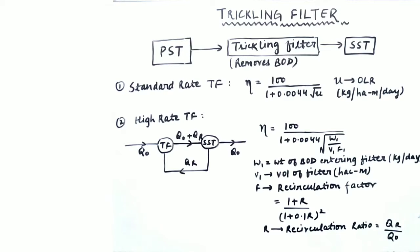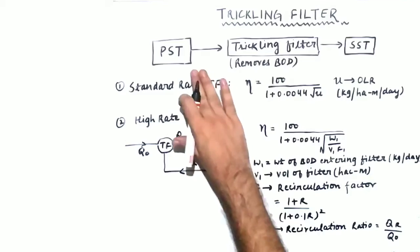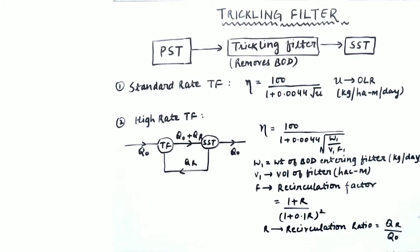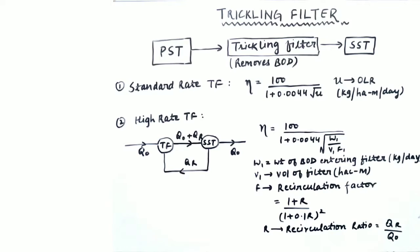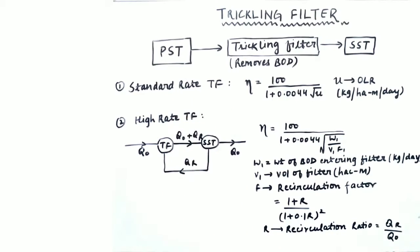Trickling filter is a component used to remove the biological oxygen demand. It is located after the primary sedimentation tank and before the secondary sedimentation tank. There are three types of trickling filters: standard rate trickling filter, high rate trickling filter, and super high rate trickling filter.